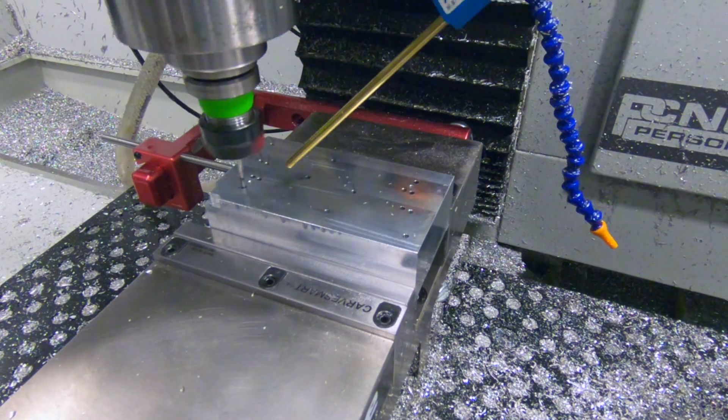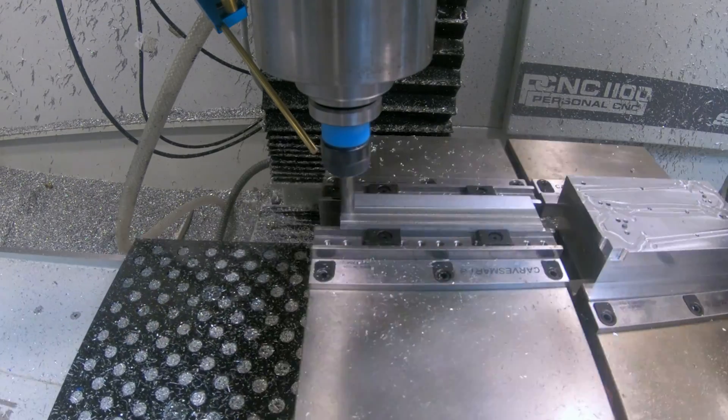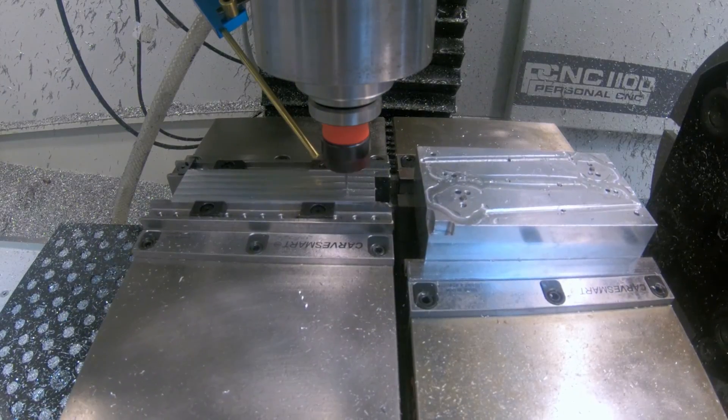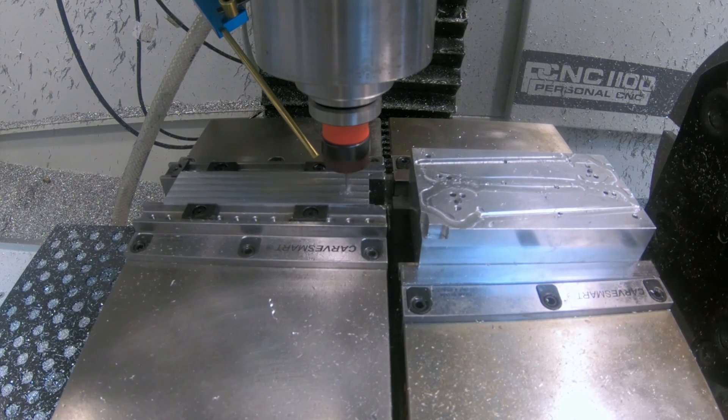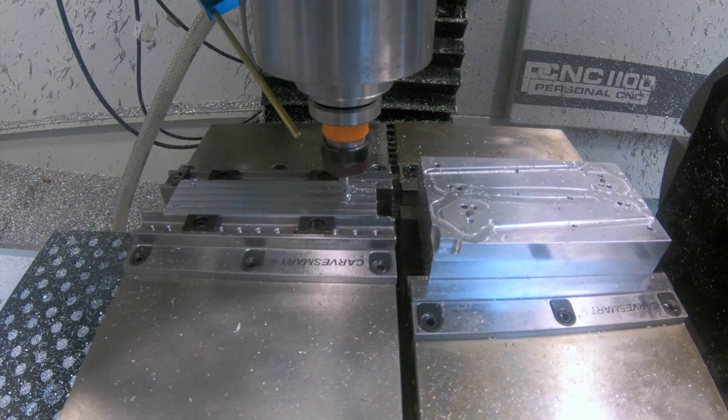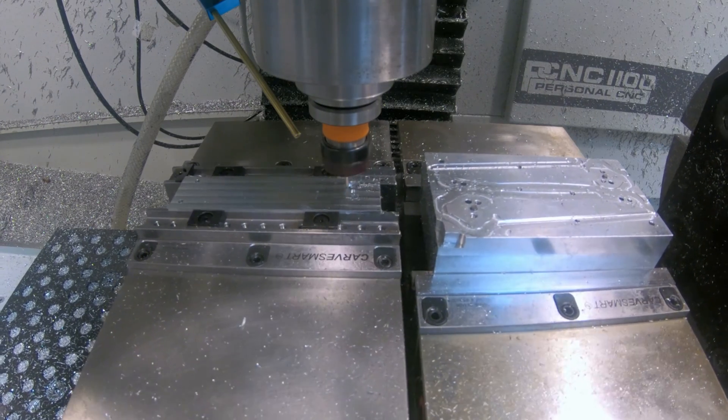The first step for making a blade is to face the stock to thickness. Then I can machine internal features on the stock. I drilled out the corners of the squares because Fusion seems to have difficulty going into a tiny corner.